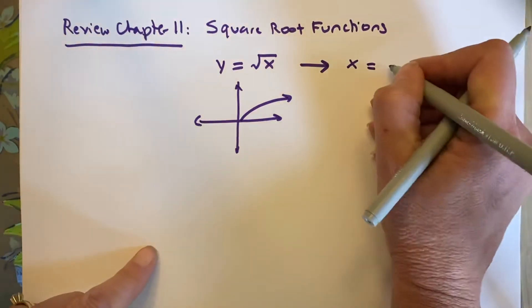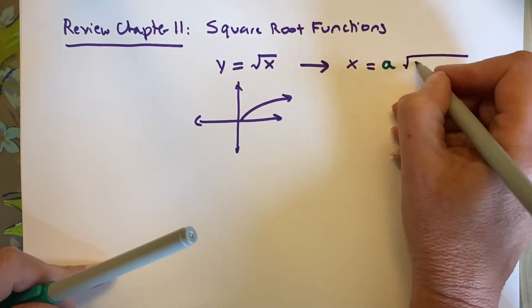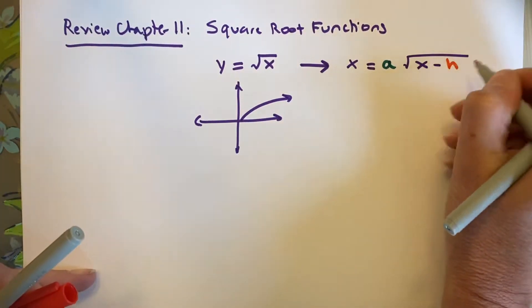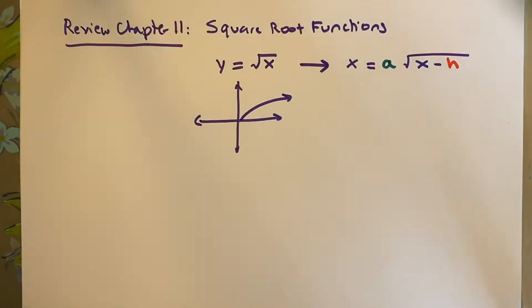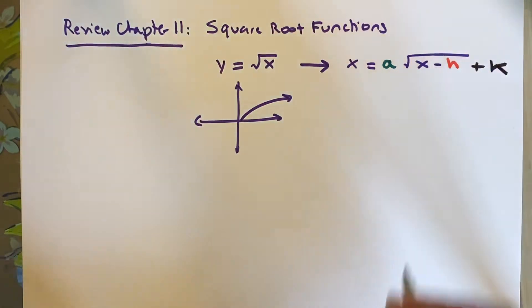...is x equal a, square root of x minus, and I'm going to just put these all in different colors, h, and I'll just do k in black, plus k.